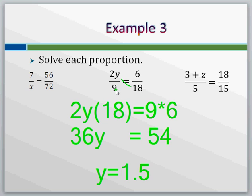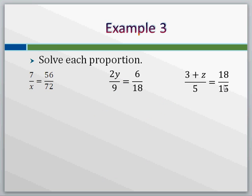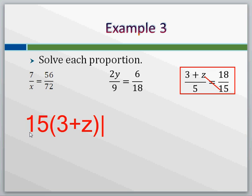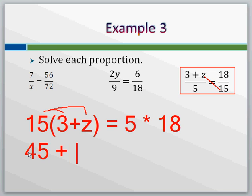Last one up, we have another proportion that is set up, this time there's some addition involved, so this is going to take a little bit of a trick here. If we cross-multiply this one out, fifteen times the three plus z side is equal to five times an eighteen side. Just like usual, we need to distribute. Fifteen times three is going to be forty-five, fifteen times z is just fifteen z, on the other side five times eighteen is ninety.